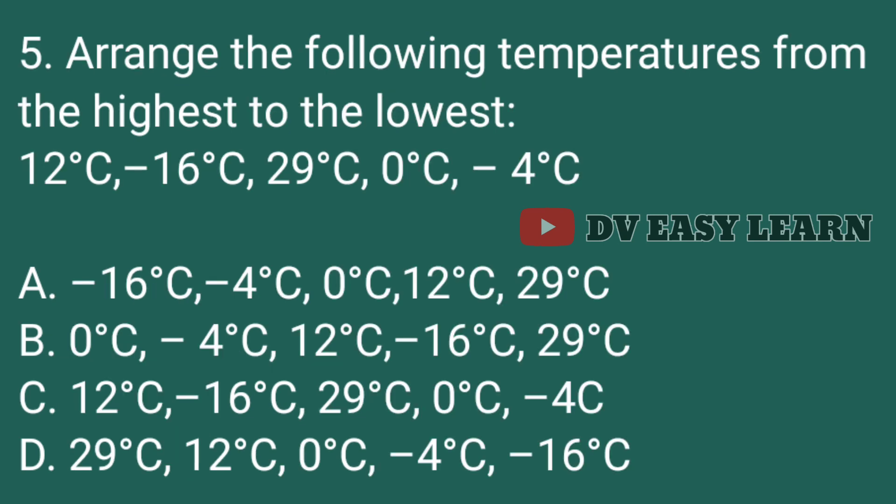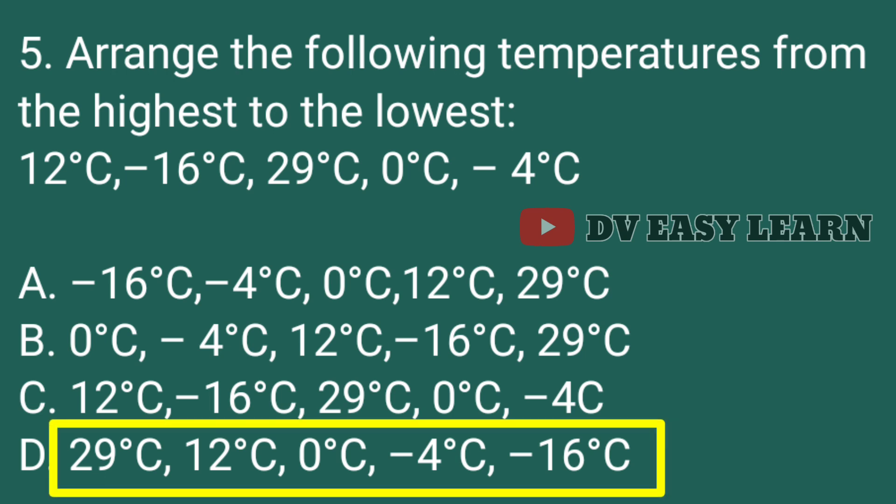Question No. 5. Arrange the following temperatures from the highest to the lowest: 12 degrees, minus 16 degrees, 29 degrees, 0 degrees, and minus 4 degrees Celsius. Correct answer, 29 degrees Celsius, 12 degrees Celsius, 0 degrees Celsius, minus 4 degrees Celsius, minus 16 degrees Celsius.